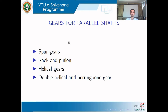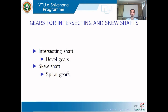For transmitting power between two parallel shafts, you can use spur gears, rack and pinion, helical gears, or double helical herringbone gears. When the two shafts are intersecting, bevel gears are used. When the shafts are neither intersecting nor parallel — skew shafts — spiral gears are used.